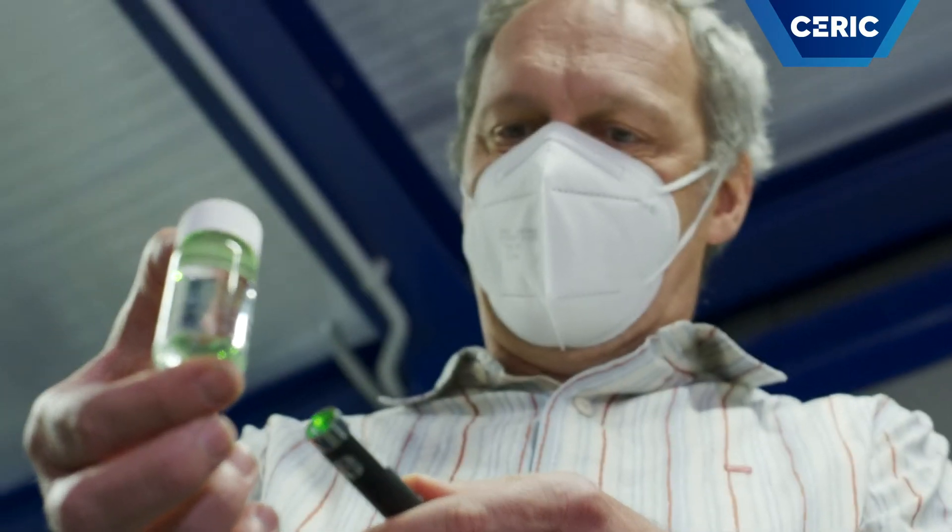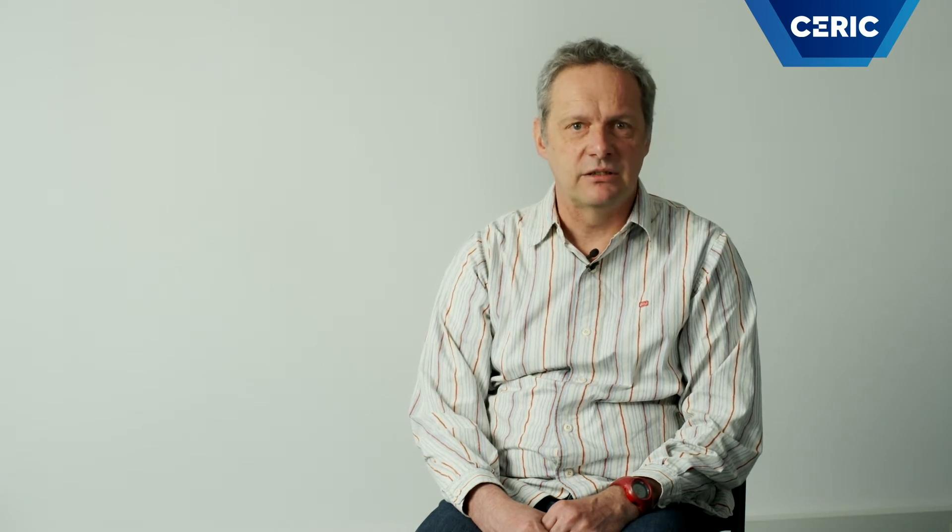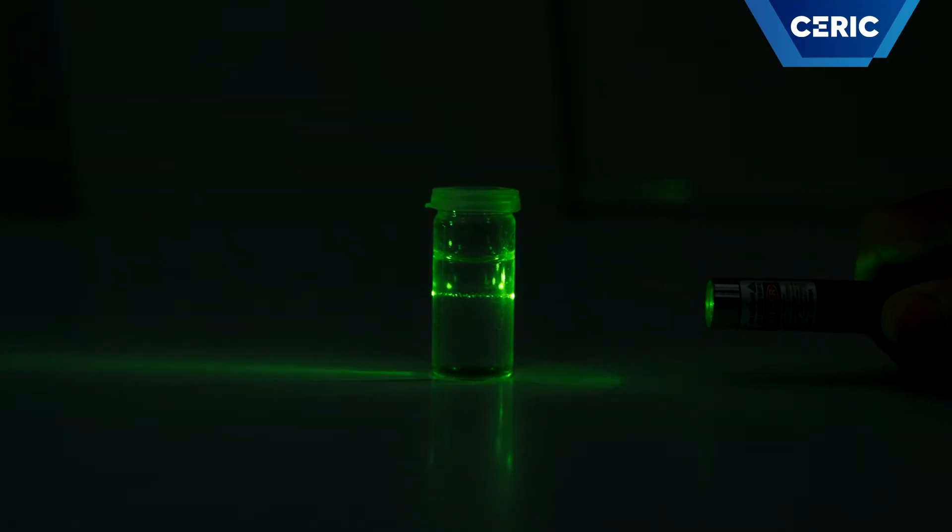If I shine with the laser through this liquid, what you observe is the laser beam inside the liquid. Structures with the dimensions of one hundredth of the diameter of a hair cause the light to scatter. This scattered light is what we measure.